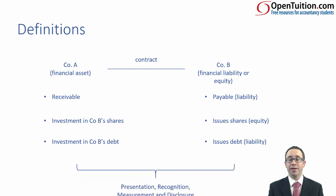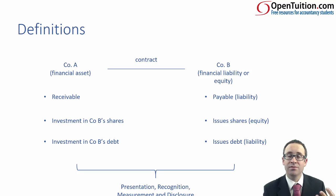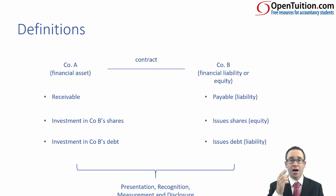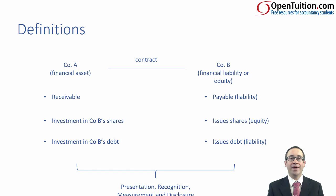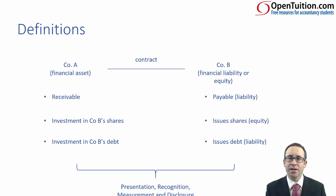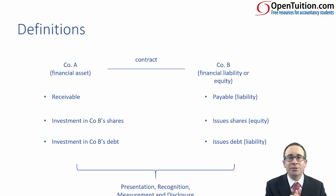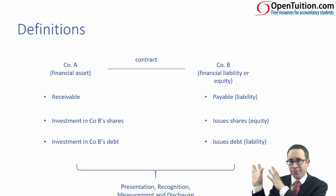We need to look at presentation of financial assets and liabilities under IAS 32, recognition and measurement under IFRS 9, and disclosure under IFRS 7. Within IFRS 9 there is also impairment, and if we get into really complex aspects such as derivatives, we then consider whether those derivatives can be used as part of hedging — but we'll keep it simple for the time being.